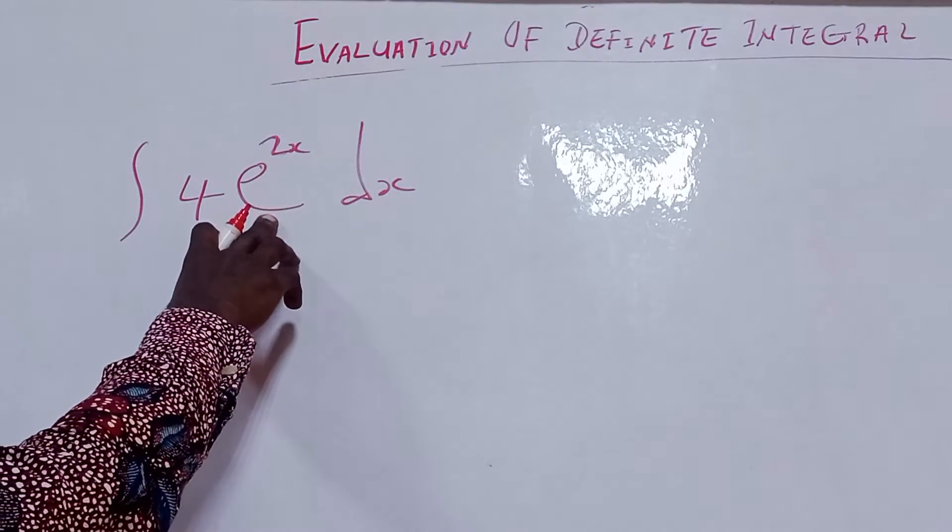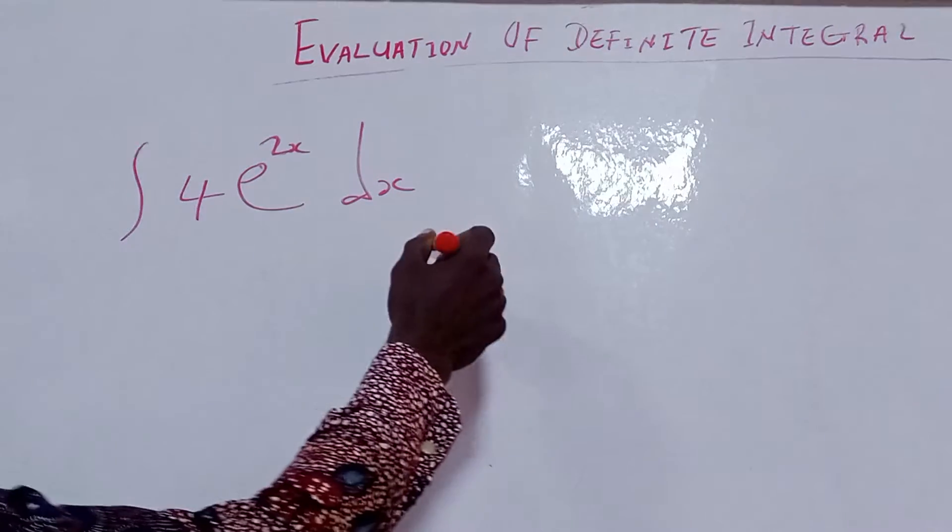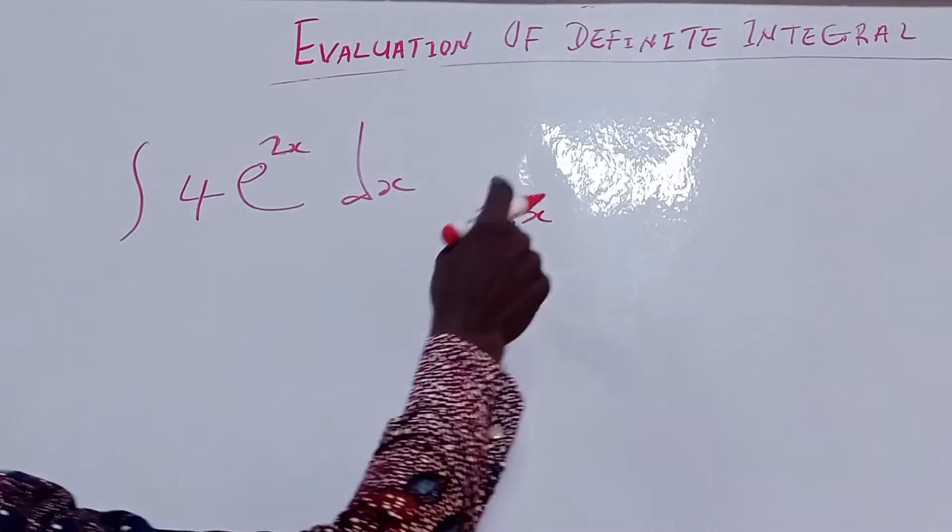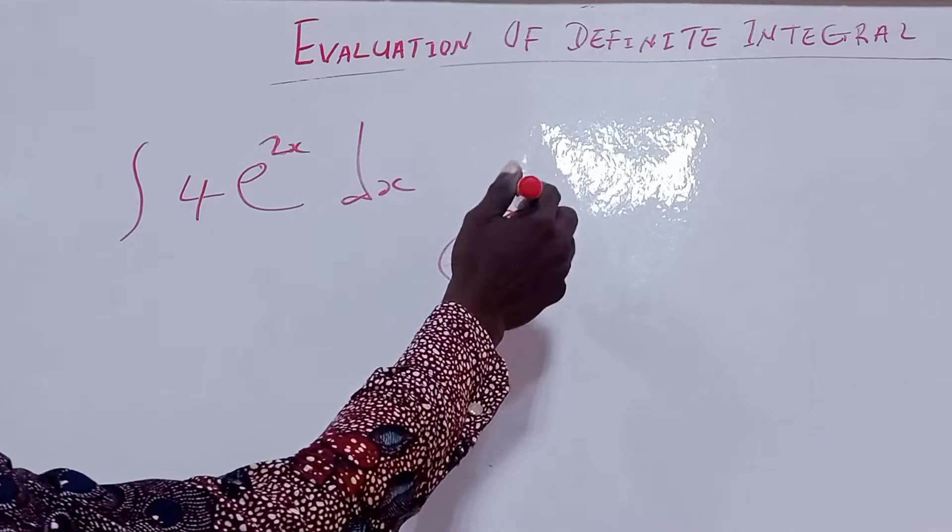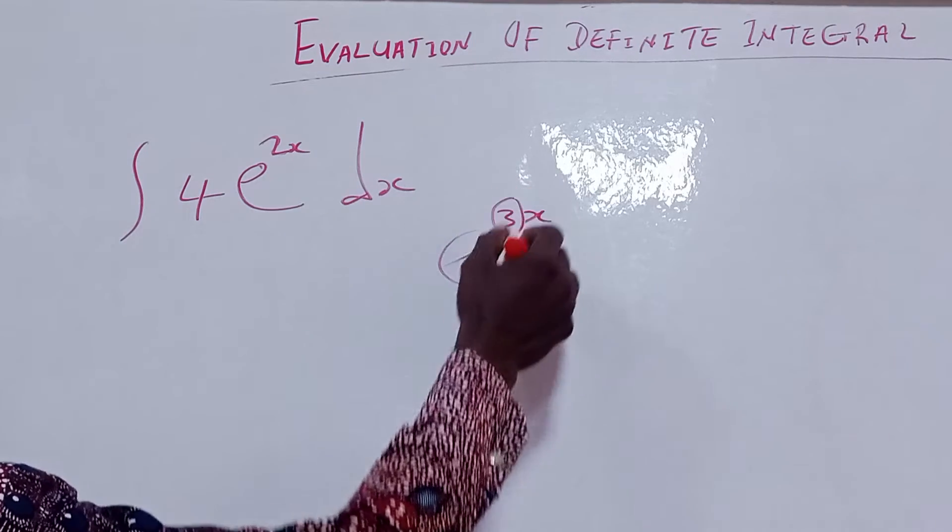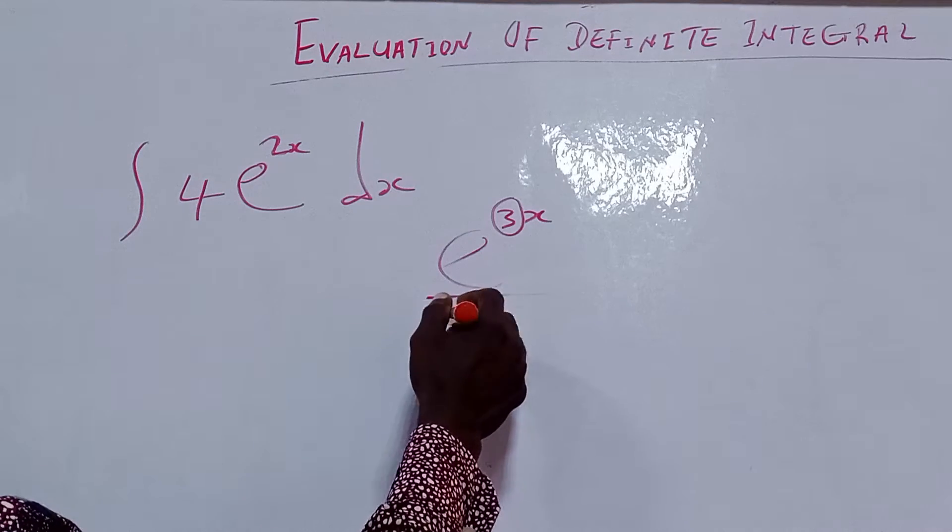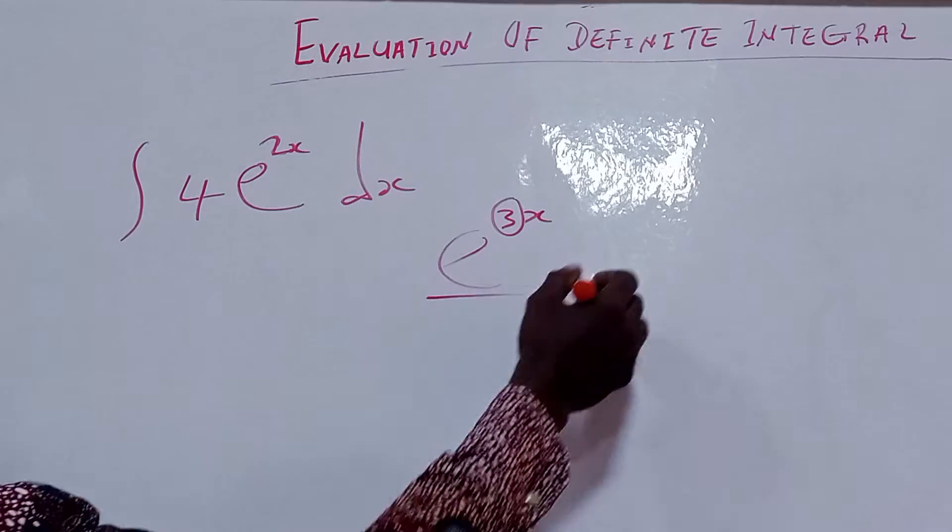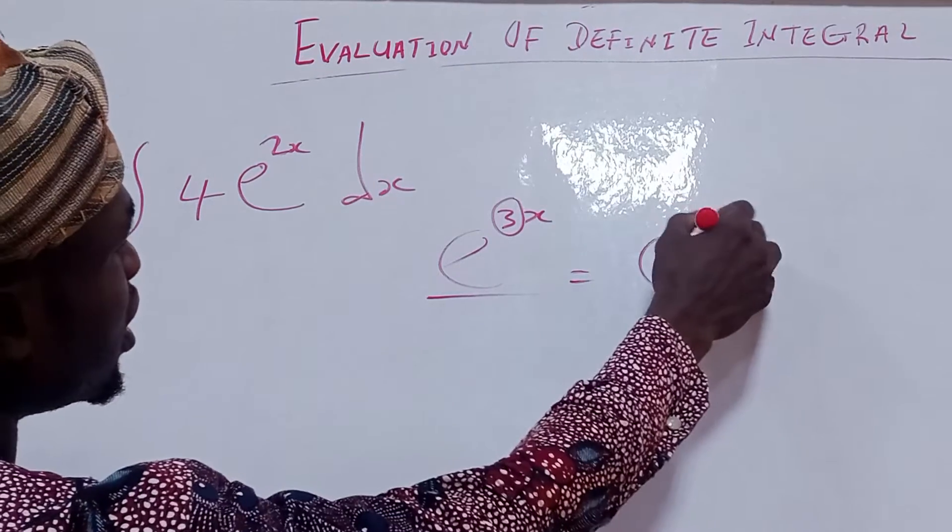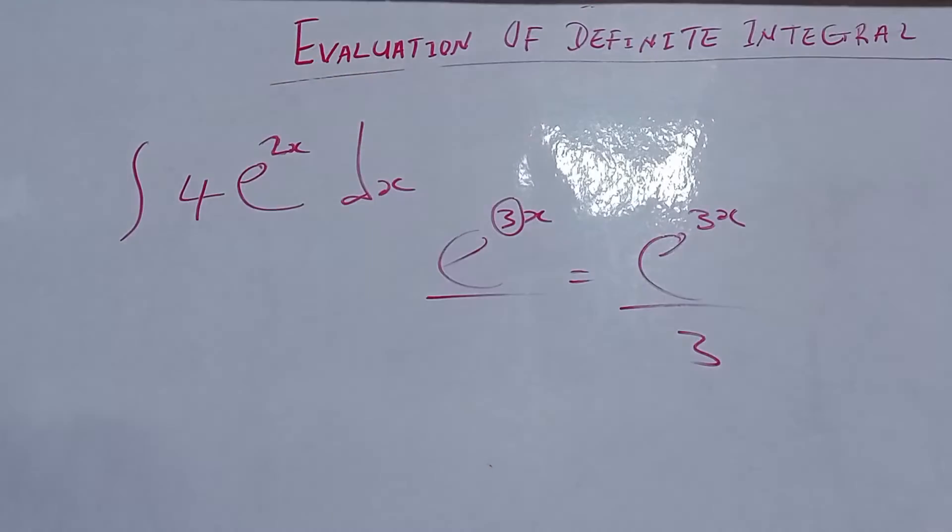So to integrate the exponential, for example, if we have 3x, we want to integrate this value. So we use the value in front of x to divide our exponential. So this one is equal to exponential 3 divided by 2. So that is how to integrate our exponential.